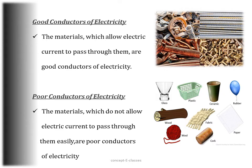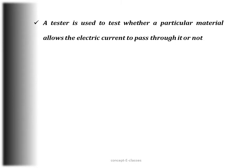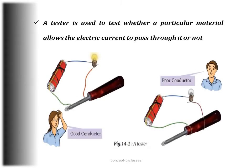Those materials which do not allow electric current to pass through them easily are poor conductors of electricity — for example, glass, rubber, cotton, paper, and wood. We can determine whether a substance conducts electricity using a tester, which consists of an electric cell, a bulb, and wires. If we attach the two wires to the metal part of a screwdriver the bulb will glow, indicating a good conductor, but if attached to the plastic handle the bulb will not glow, indicating a poor conductor.